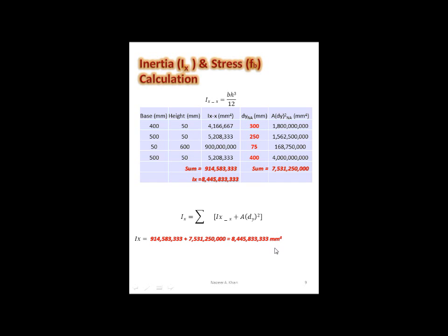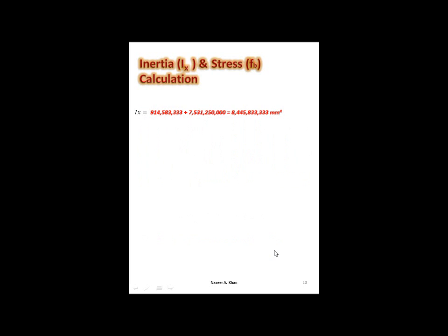Now I have all the variables I need to apply to my stress formula. Stress in MPa equals moment in newton per millimeter times my y-bar, and I'll have two y-bars because I have two distances to the outer edge from my neutral axis, divided by my inertia value of the complex shape. The y-bar above the neutral axis is 325, and the y-bar below it is 425. The bending moment is 32.8 kilonewton·meter, but the units are not right.